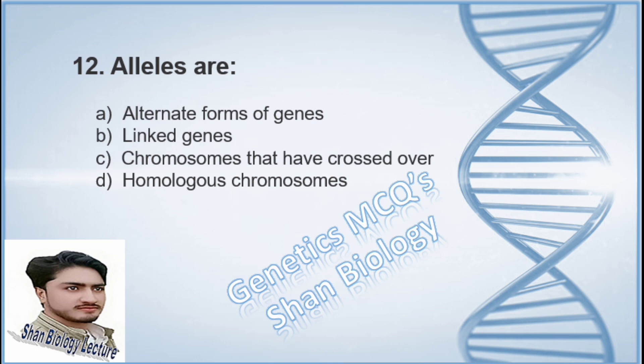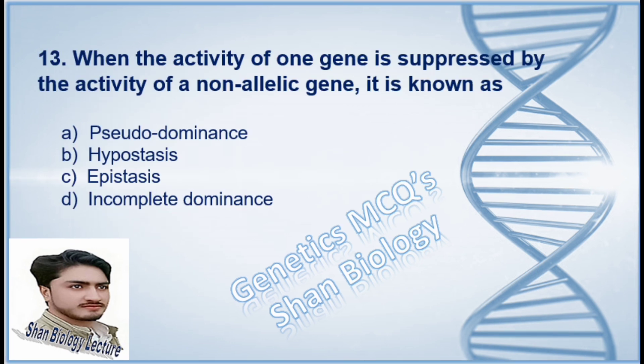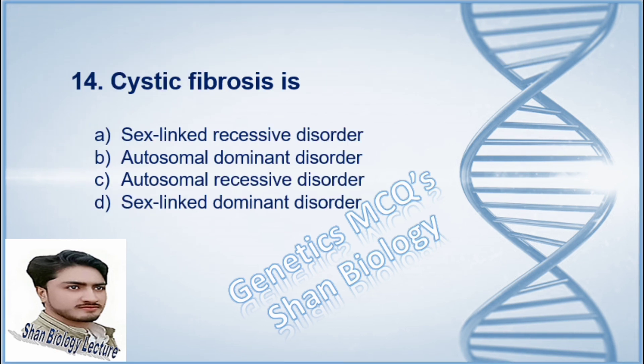Question 12: Alleles are — option A alternate form of gene, option B linked genes, option C chromosomes that have crossed over, option D homologous chromosomes. The correct option is A, alternate form of gene. Question 13: When the activity of one gene is suppressed by the activity of a non-allelic gene, it is known as — option A pseudo dominance, option B hypostasis, option C epistasis, option D incomplete dominance.